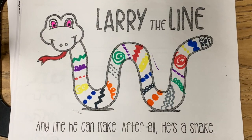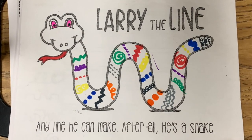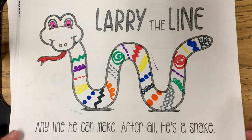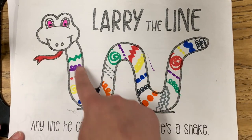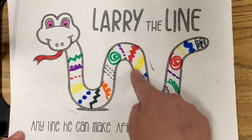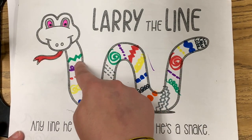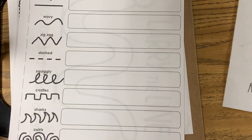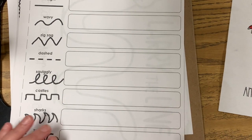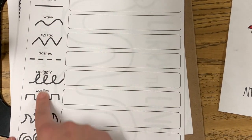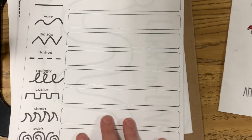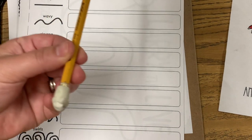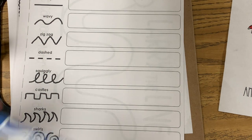We are going to work on our Larry the Line today. This is the finished product — this is what you're going to make. We're going to decorate Larry with all the different lines. If you use a different color for each one, it really makes it look nice. We're going to turn to page six of the artwork book — these show us the different lines we're going to learn. You can use your pencil or one of your markers.